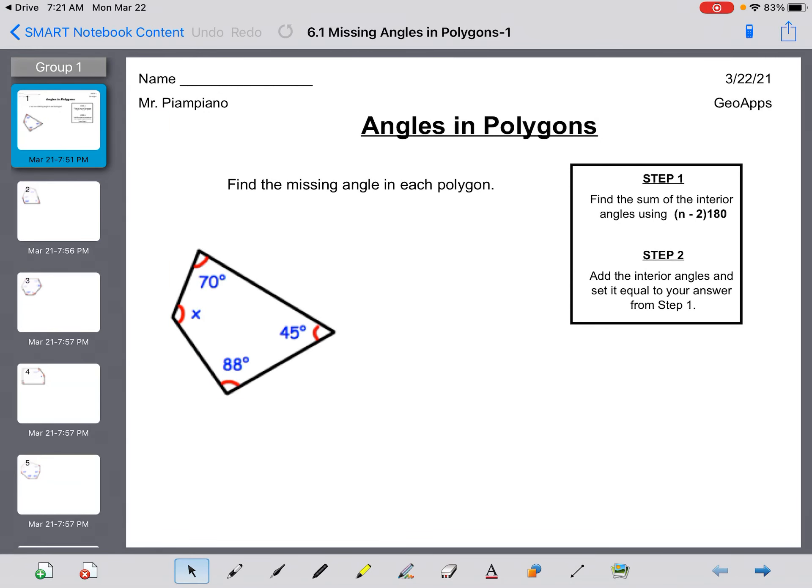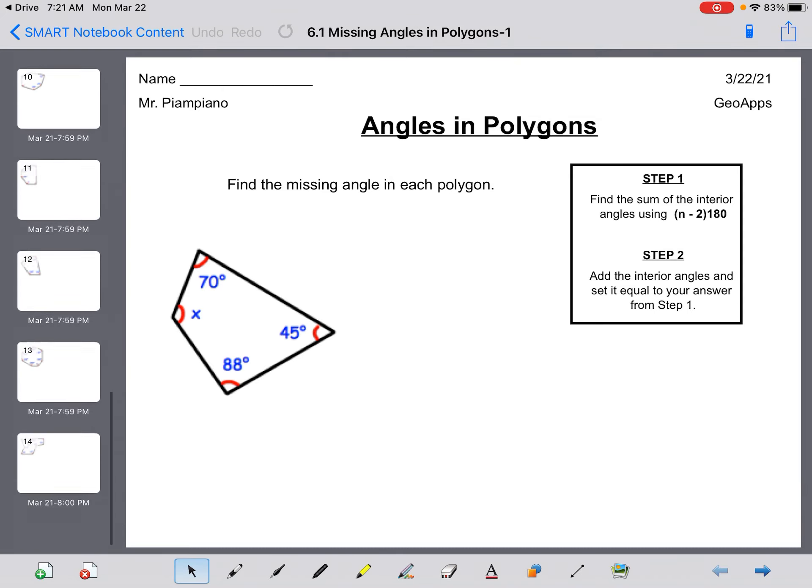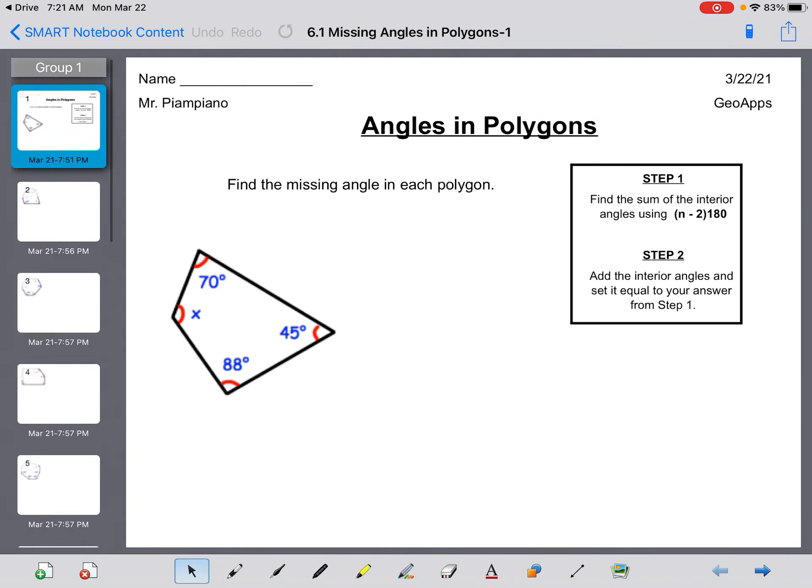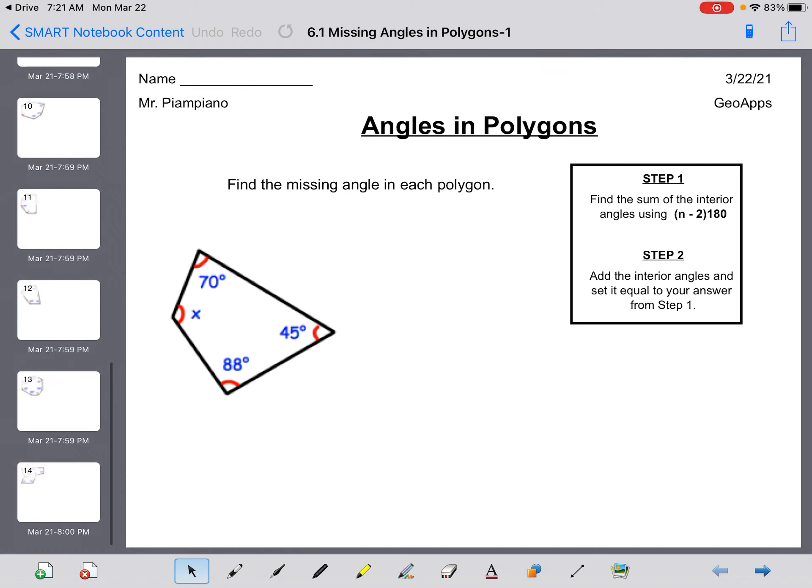Okay everyone, this is 6.1 missing angles and polygons. I'm going to provide you with two examples. There's 14 questions total. Then work through them on your own following step one and step two.